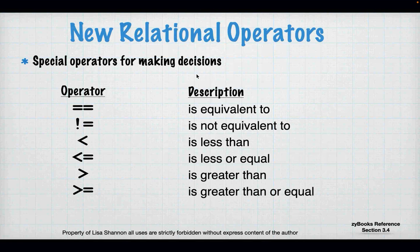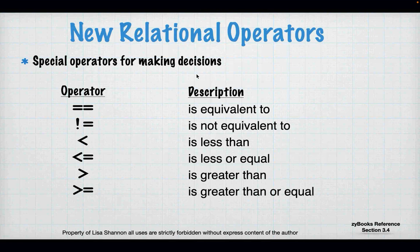Special operators for making decisions are called relational operators. They are not doing assignment like we've done in the past — that's where a variable on the left gets a value on the right. Relational operators are about comparing: something on the left hand side is compared to something on the right. The left hand side is usually a variable; the right hand side is usually a value or another variable.